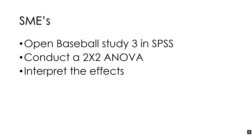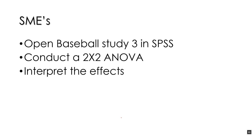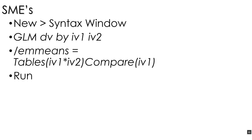To do this, you open up the baseball study number three in SPSS, conduct a two-by-two ANOVA, and interpret the results. To calculate the simple main effects, you go to File, open a new syntax window, and type the GLM command: 'glm dv by iv1 iv2'.